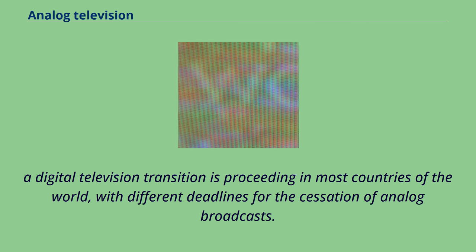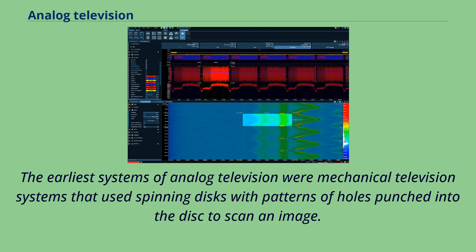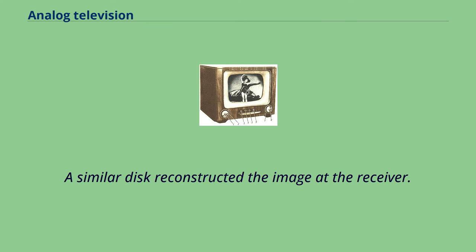The earliest systems of analog television were mechanical television systems that used spinning disks with patterns of holes punched into the disk to scan an image.